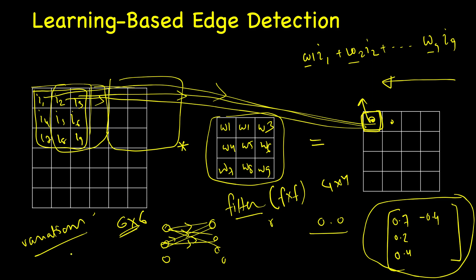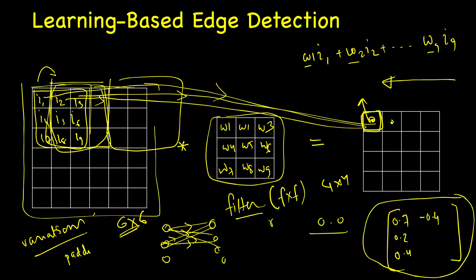In the next lesson we will see the concept of padding, where we pad the image beforehand so that after convolution the result remains the same size. We will also look at different strides — instead of shifting the filter by one each time, we can use larger strides. These are the key variations of convolution that form the fundamental building block of convolutional neural network layers.